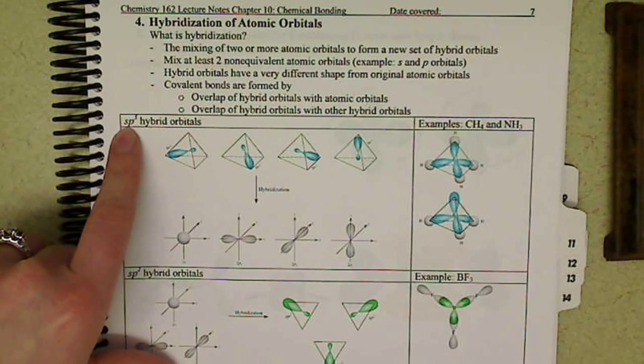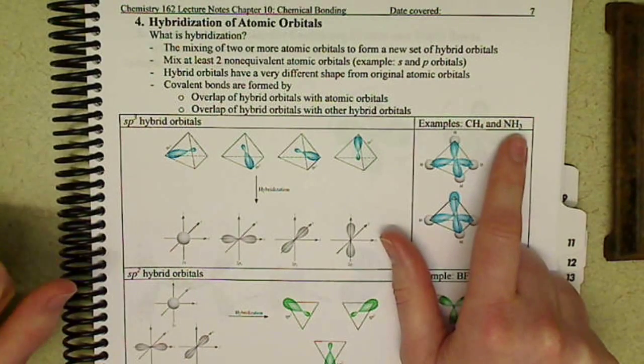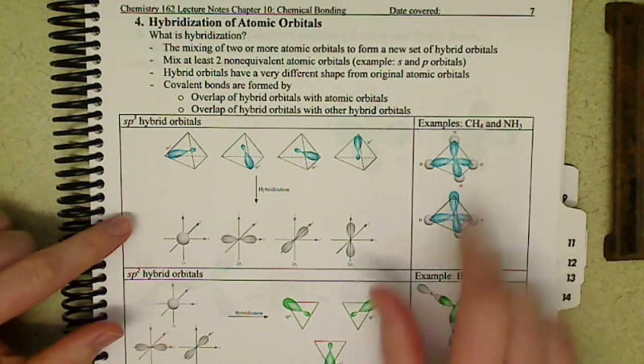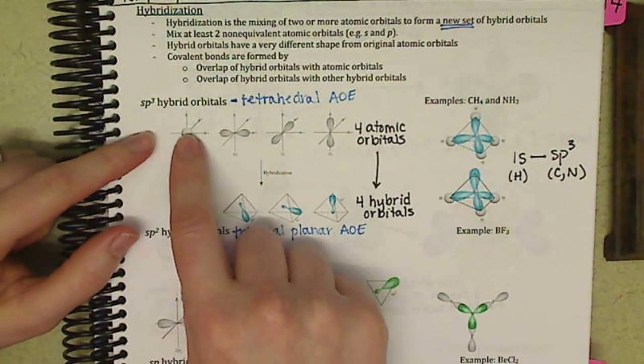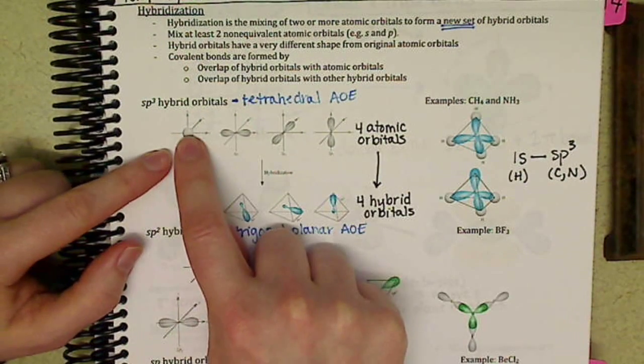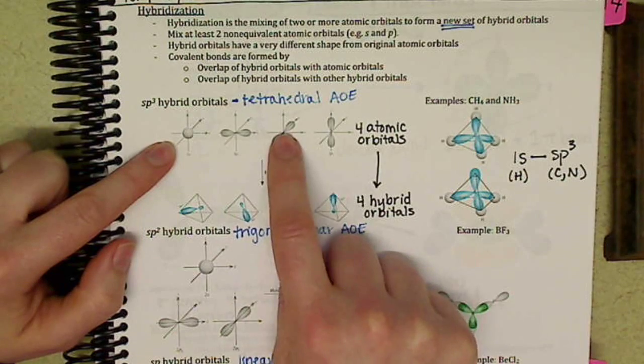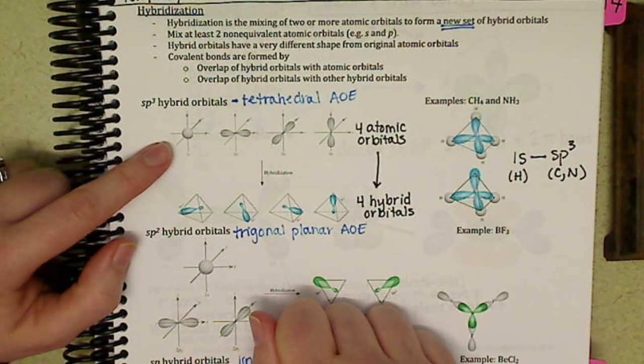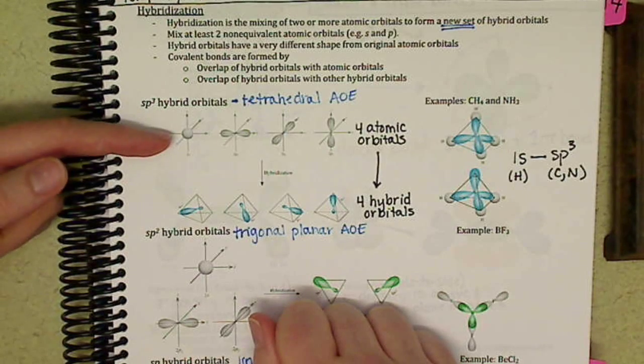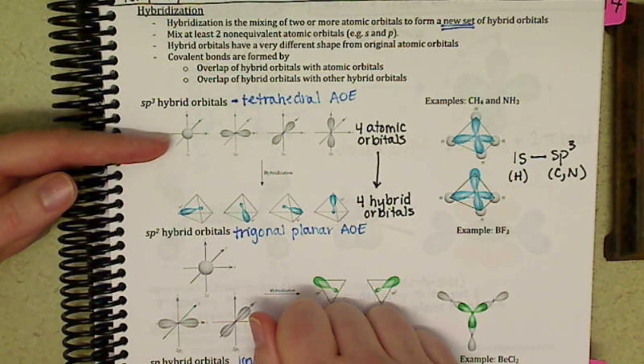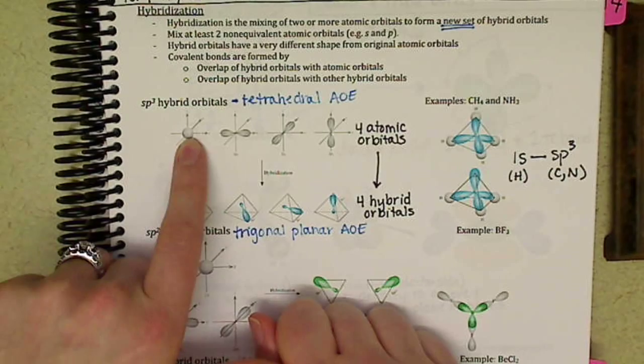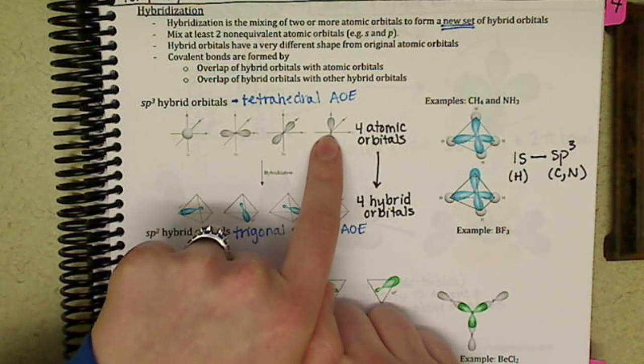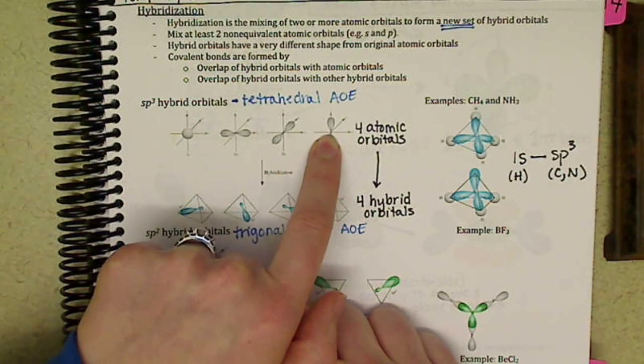So in our sp3 hybrid orbitals, which pertains to our NH3 molecule, methane is also an example of it. We have our atomic orbitals - the S, and then three orientations for our P orbitals. These are the orbitals that are coming from nitrogen. Nitrogen is our central atom. It's the one that's doing the bonding, and it's the 2S and the 2PX, 2PY, and 2PZ of the nitrogen that we're hybridizing.